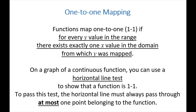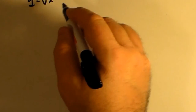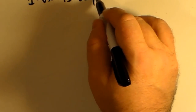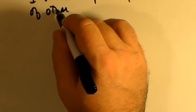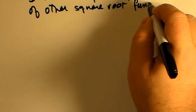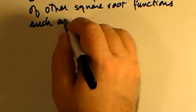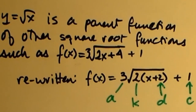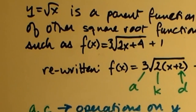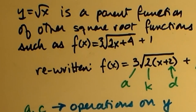Functions map one-to-one if for every y value in the range there exists exactly one x value in the domain from which it was mapped. On a graph of a continuous function, you can use the horizontal line test to confirm one-to-one behavior. Don't confuse this with the vertical line test, which distinguishes a function from a relation. The horizontal line test becomes important when discussing inverses of functions.